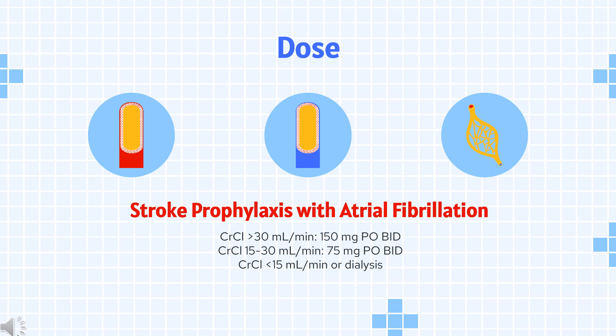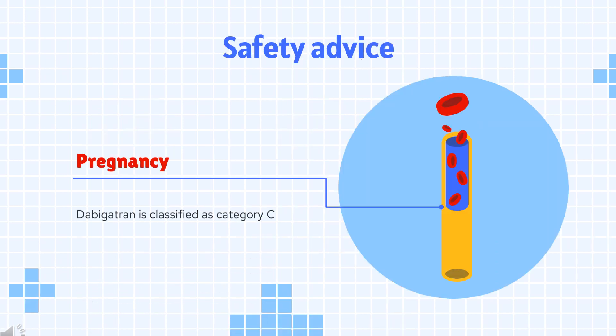DVT or PE Prophylaxis: Indicated for the prophylaxis of DVT and PE following hip replacement surgery. CrCl greater than 30 mL per minute: 110 mg PO 1–4 hours after surgery and after hemostasis has been achieved on the first day, then 220 mg once daily for 28–35 days. If dabigatran is not started on the day of surgery after hemostasis has been achieved, initiate treatment with 220 mg once daily. CrCl less than or equal to 30 mL per minute or on dialysis: dosing recommendations cannot be provided. CrCl less than 50 mL per minute with concomitant use of P-gp inhibitors: avoid co-administration.